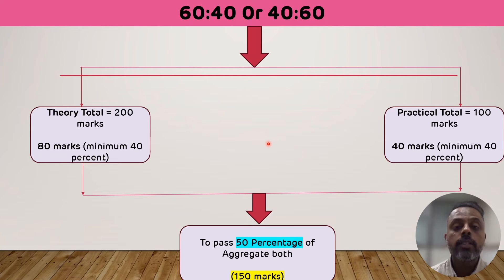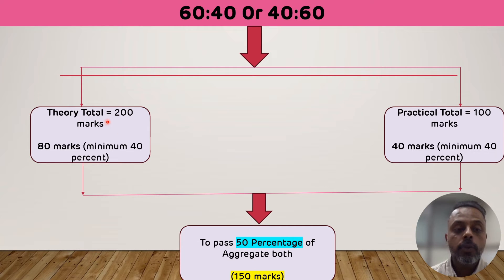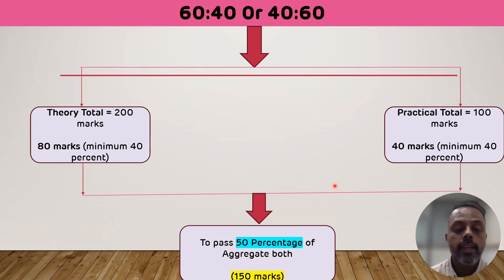This is for subjects which have two papers. For subjects with one paper, like Ophthalmology or ENT, the theory total marks will be 100, and the student has to score 40 marks in theory. The practical will also be 100 marks. So the aggregate is out of 200, and the student has to score 100 marks to pass.